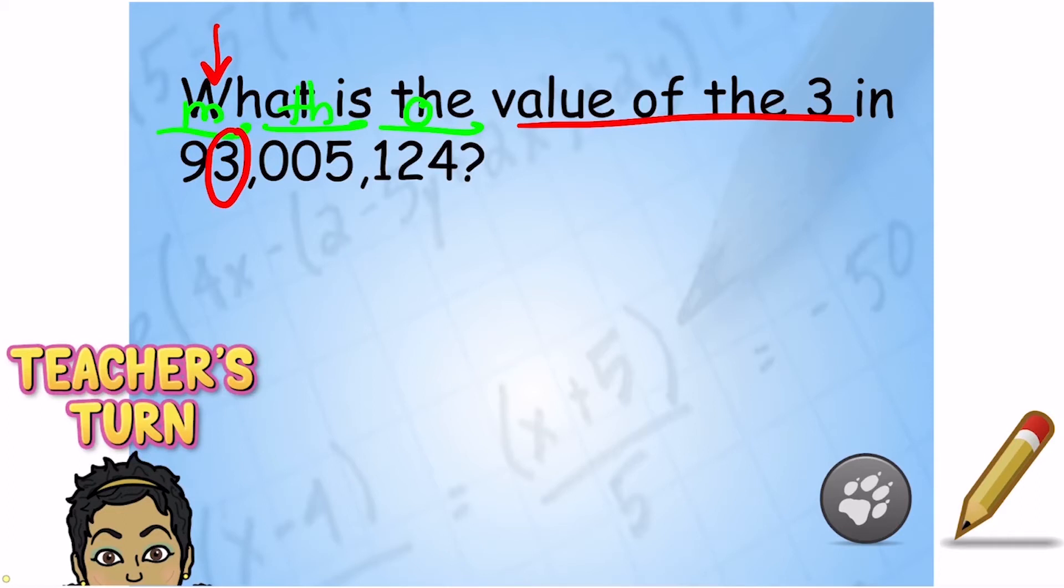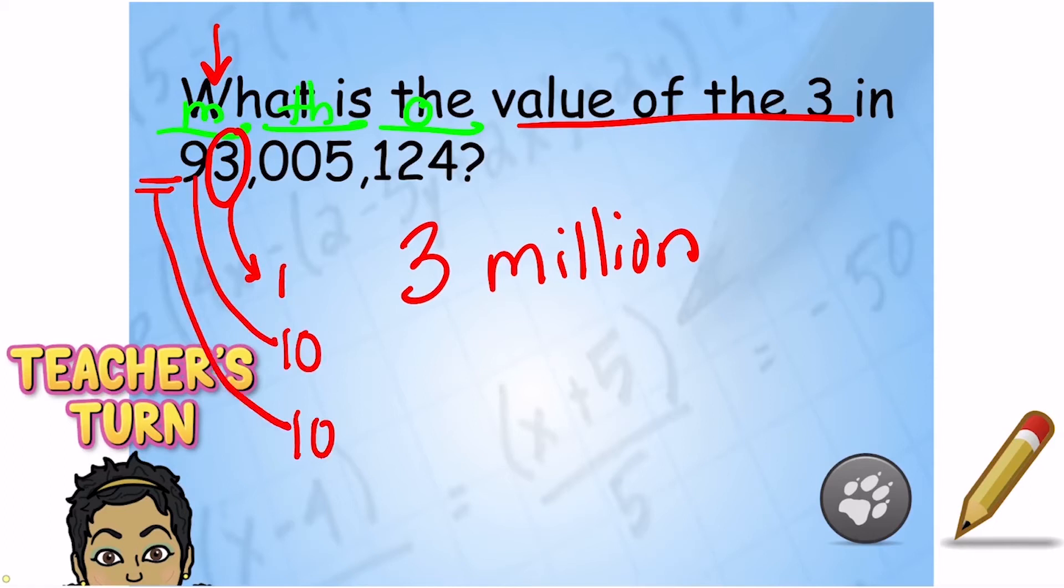And now I'm just going to use my first name, last name. This three is in the millions family, so that three is just three million. The other thing I want to look at is—remember we said there's a system to this—I have ones, tens, and if there was another number here, I would have hundreds. This three is just three ones, so it's three million. So I know I have the right value.